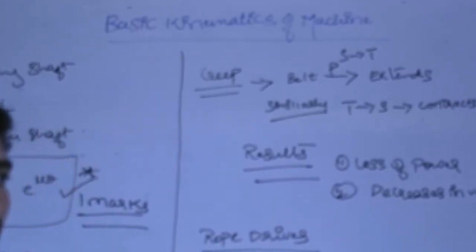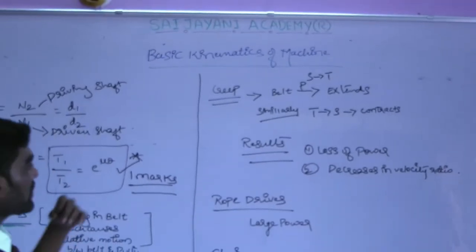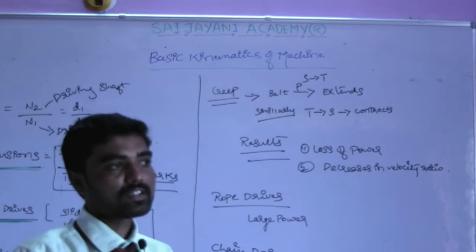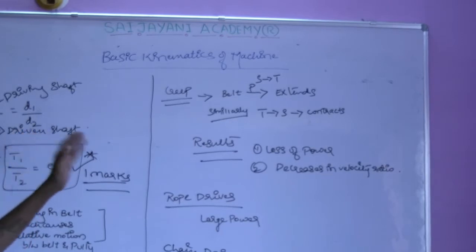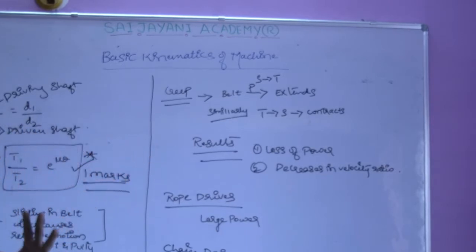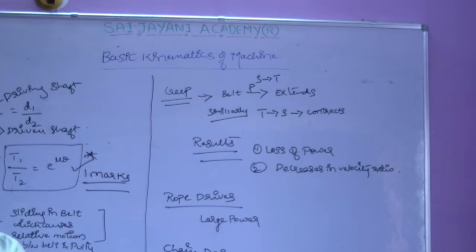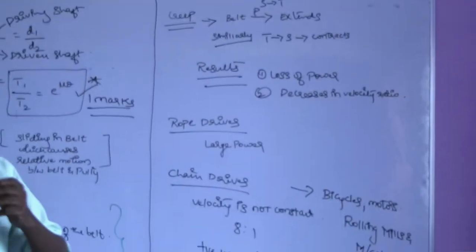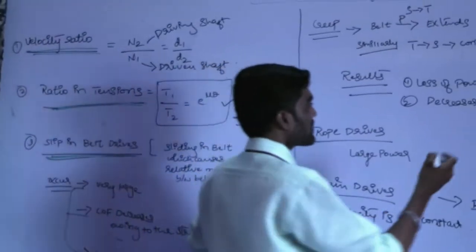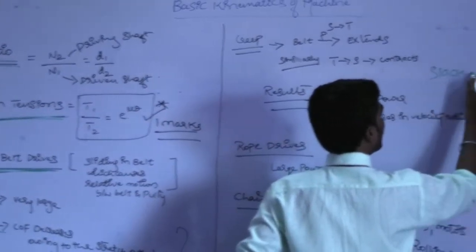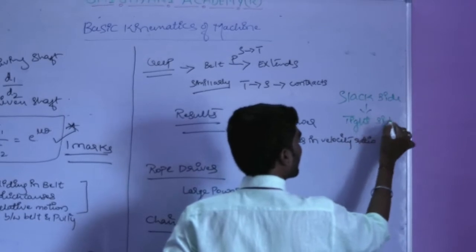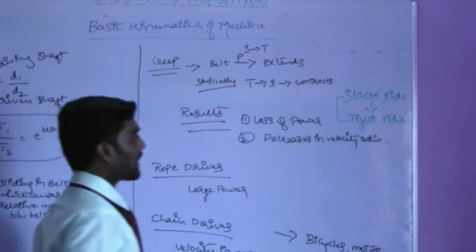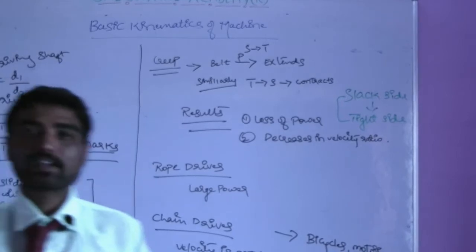The belt will be transferred through the elastic tight side. Every step on the tight side will cause contraction. The slack side and tight side govern power transmission. The tight side is extended and the slack side contracts.